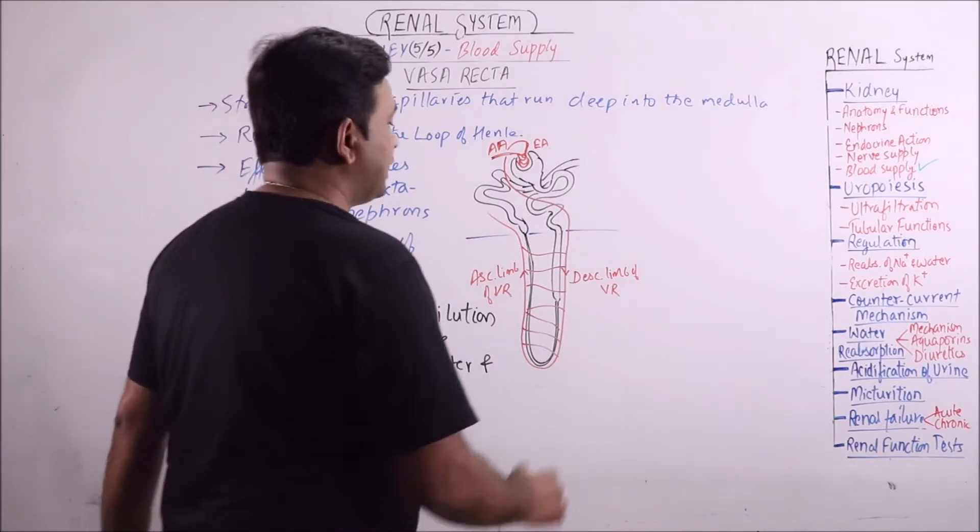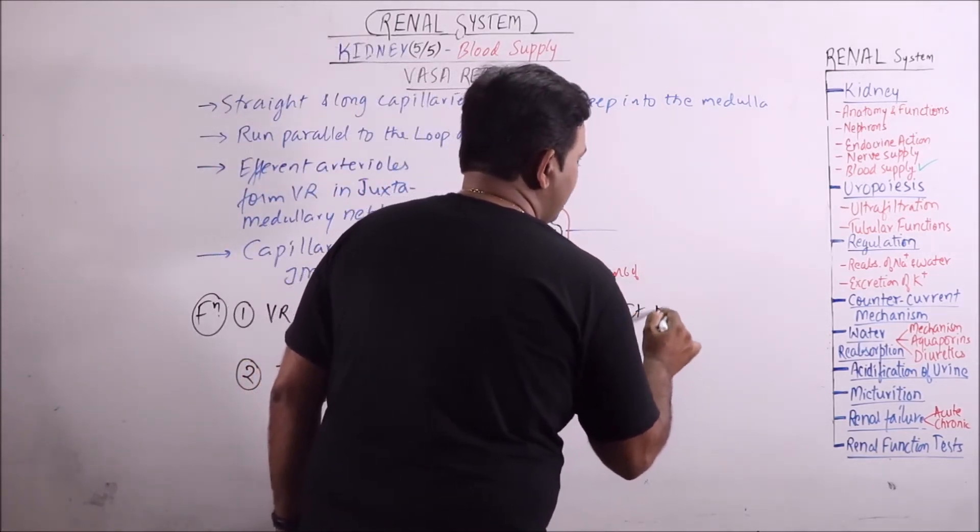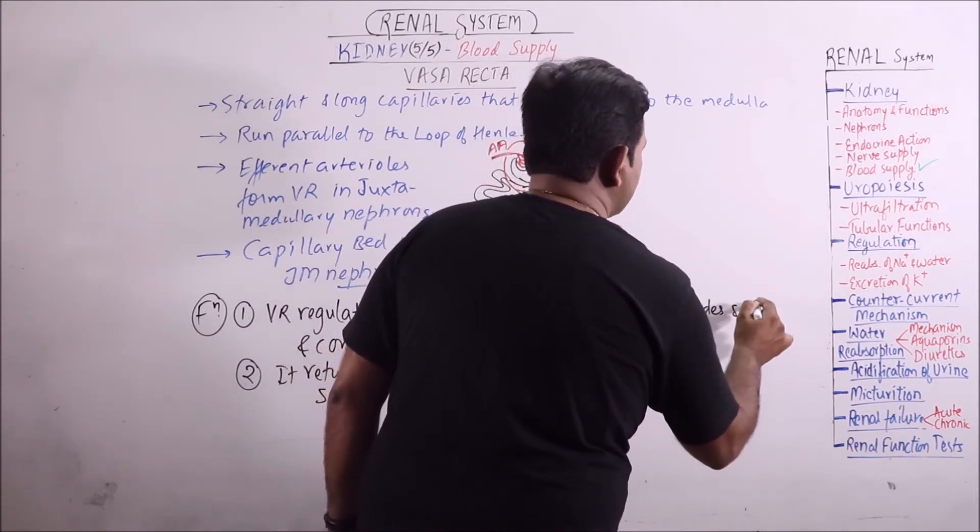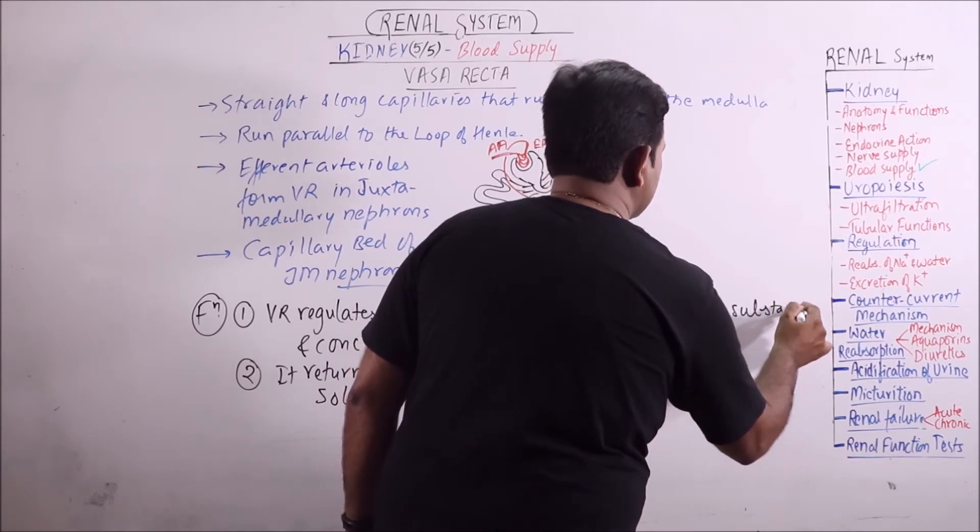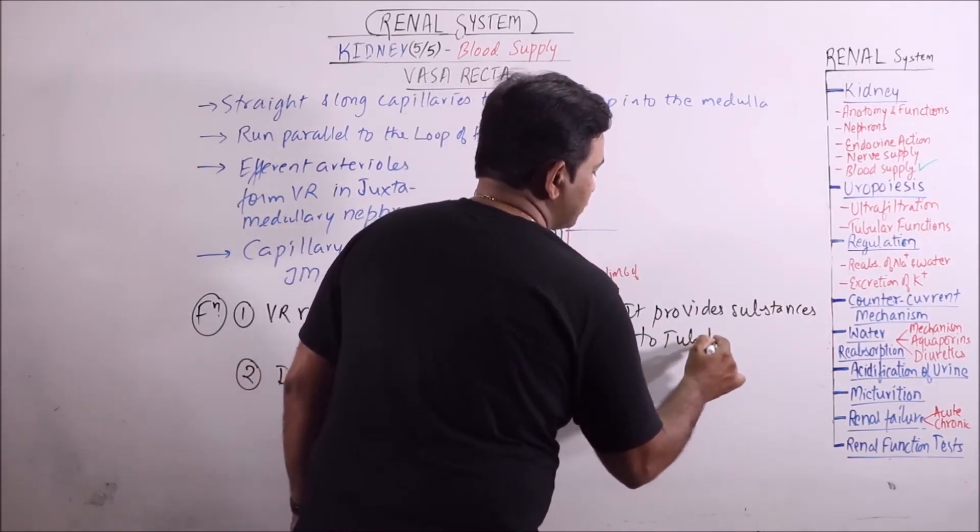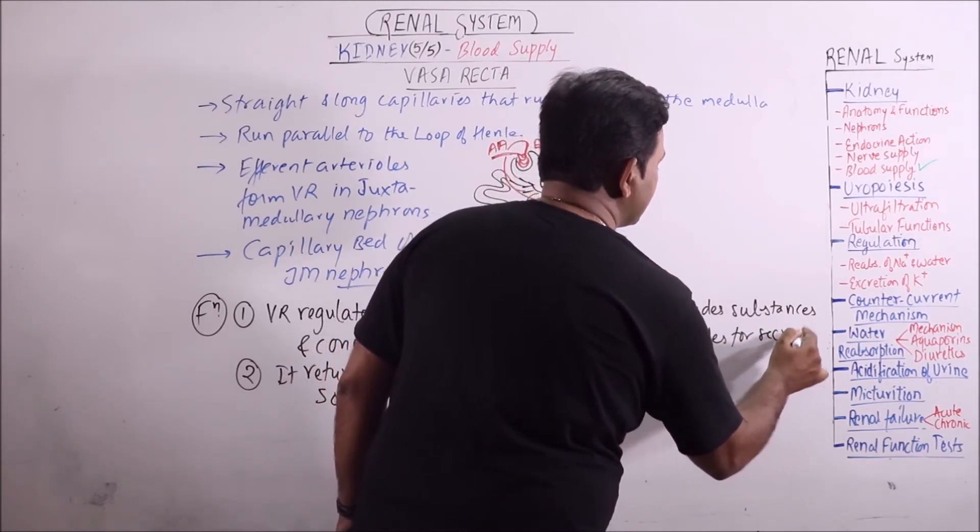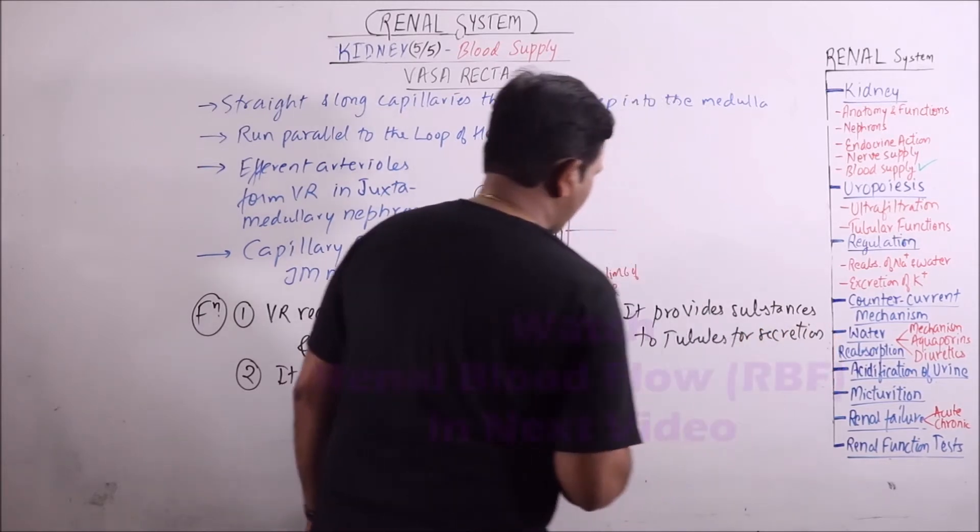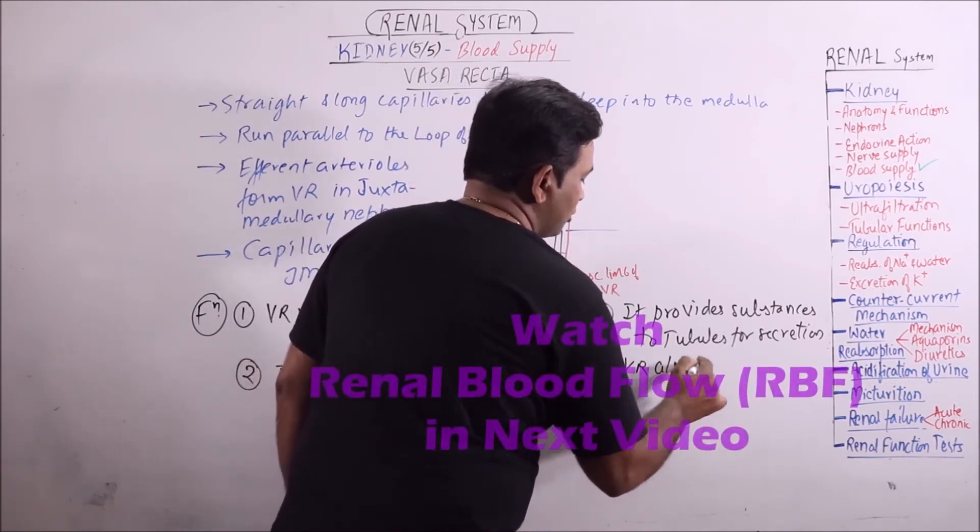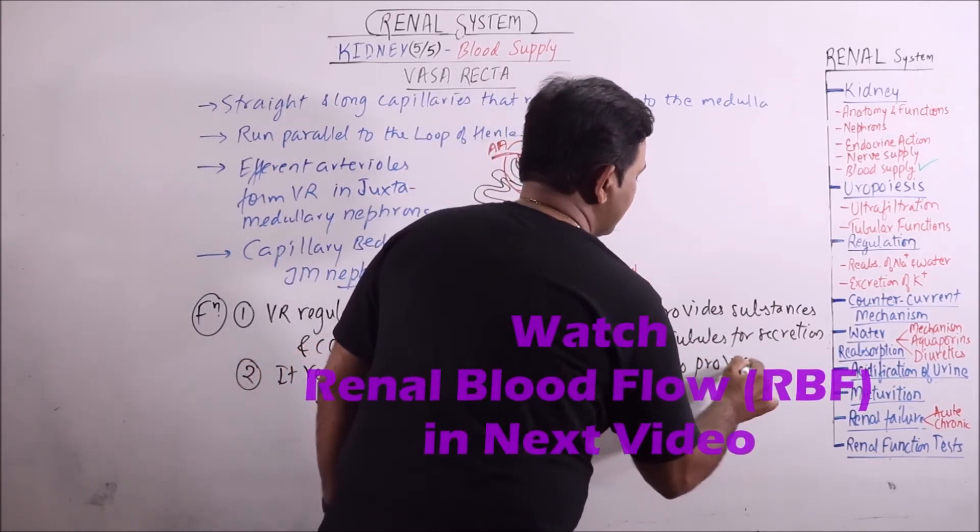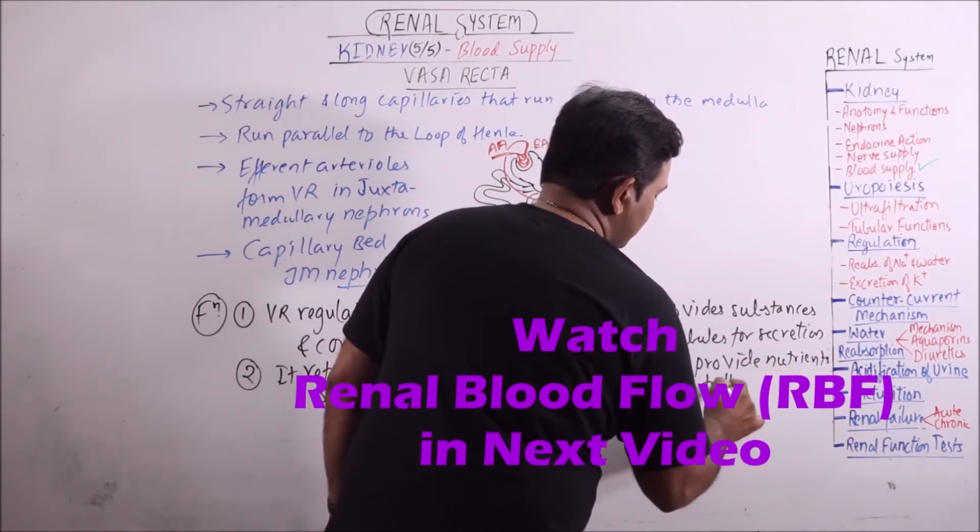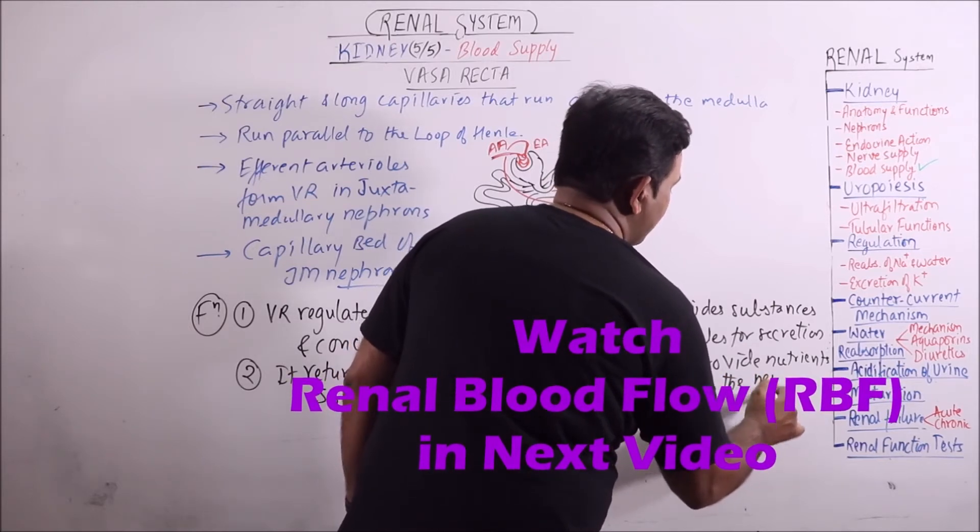Then it provides substances to tubules for secretion, that is tubular secretion, and Vasarecta also provides nutrients to the nephron.